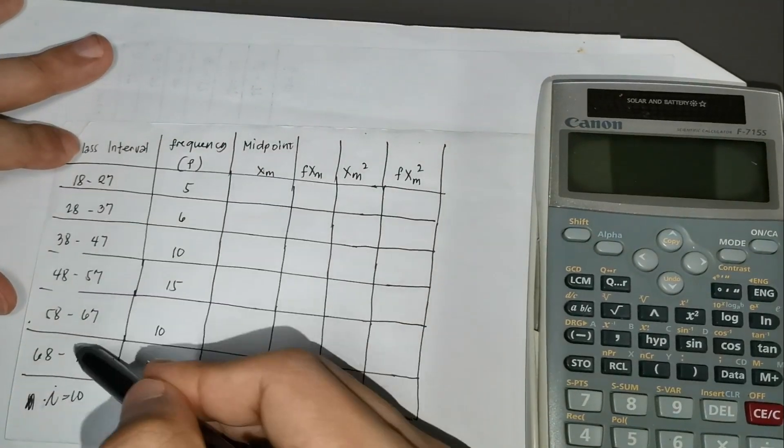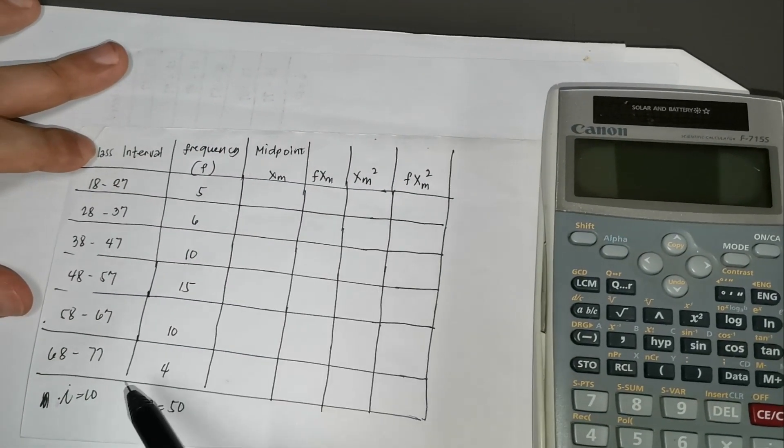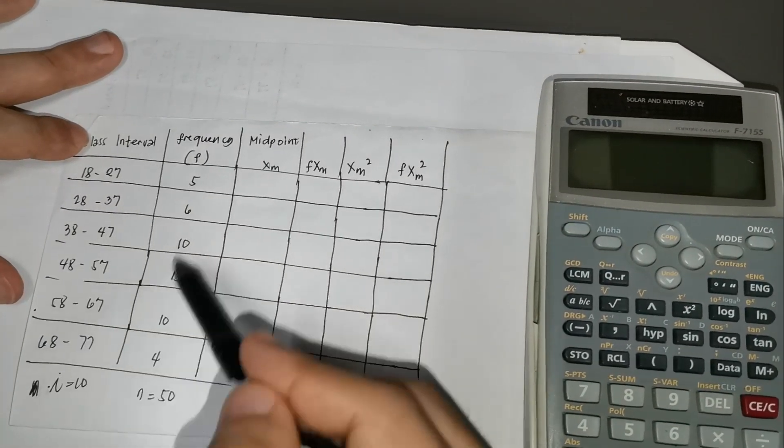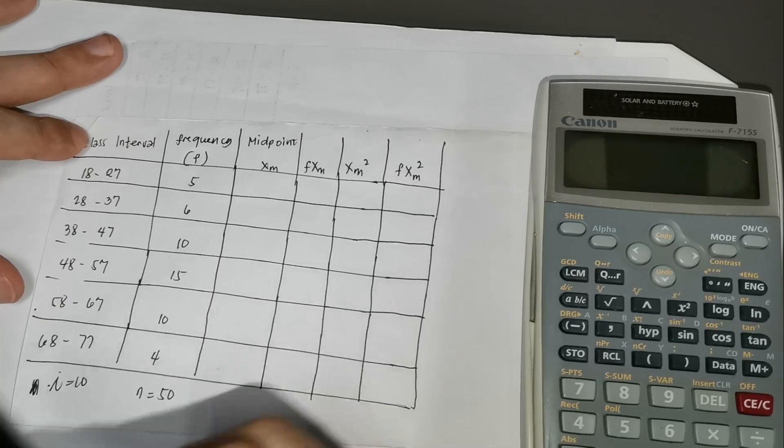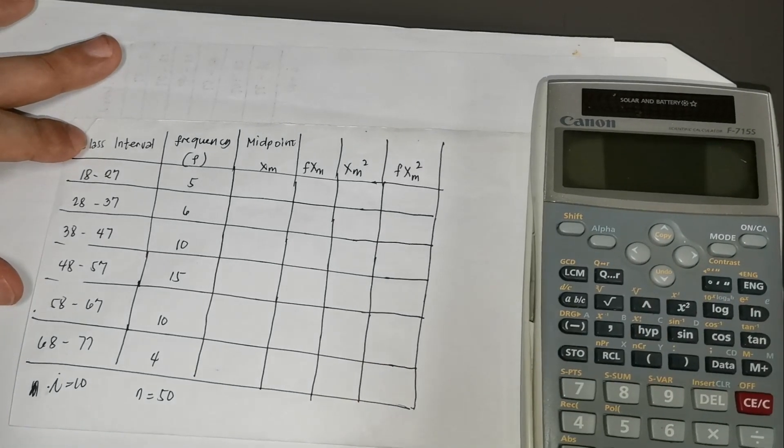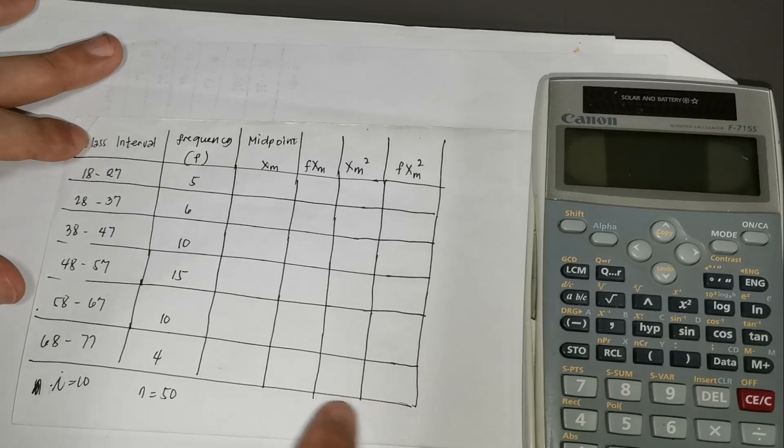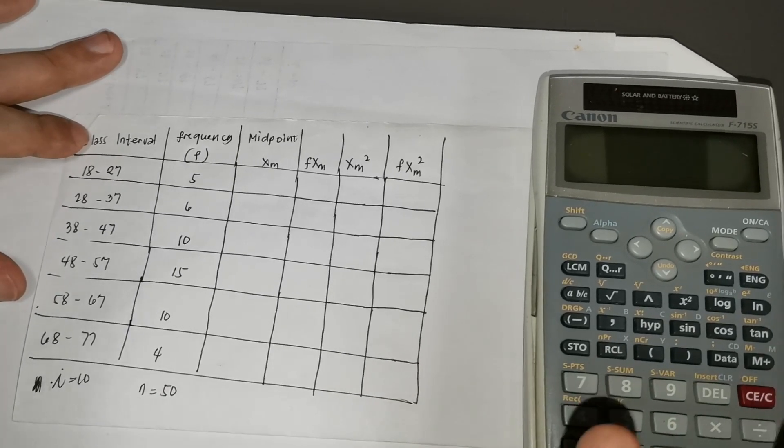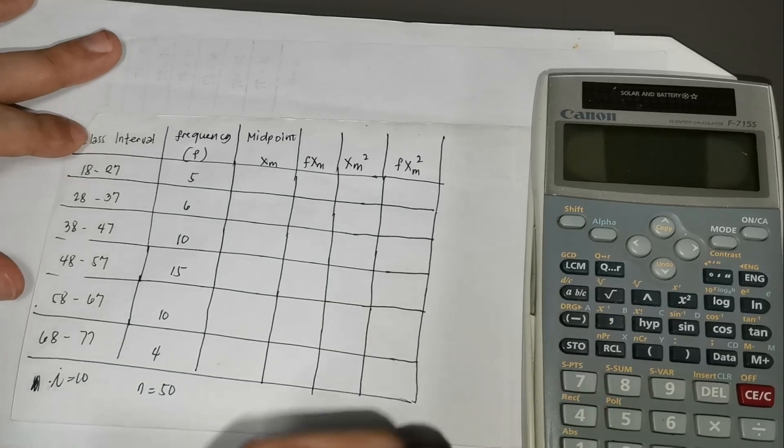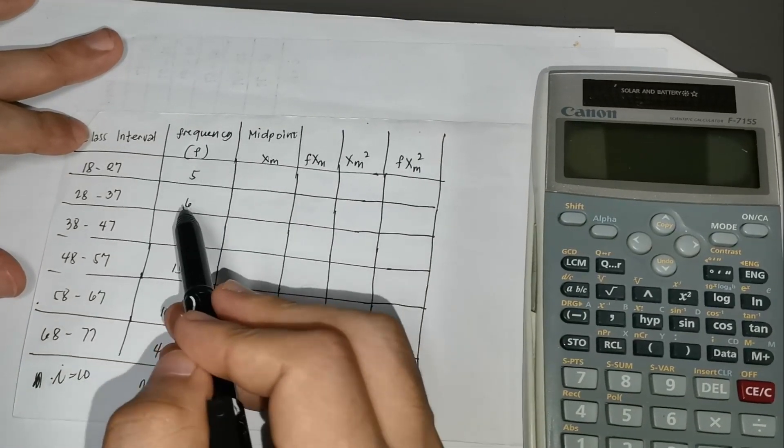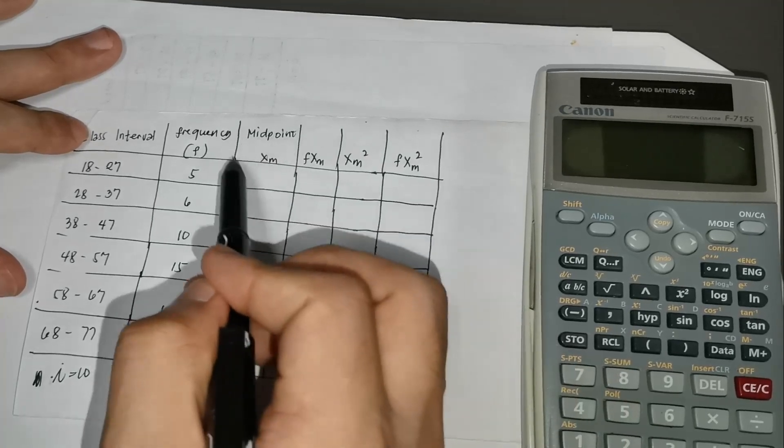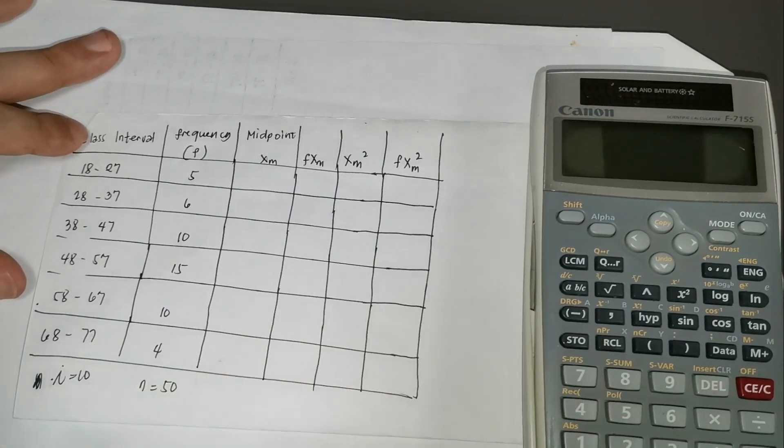What we're going to do now is how to solve for variance and standard deviation. Let's start now in our example. Here is our example. We have the column for class interval and then the column for class frequency. Given this data set, we will compute for the variance. These are the next four columns that we have to complete in order to solve for variance. Let's start with midpoint, also known as the class mark, denoted by the symbol x sub m in most statistics books.